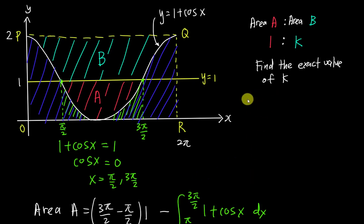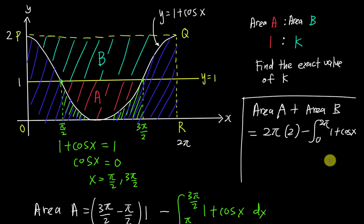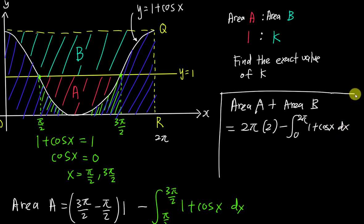I can say Area A plus Area B equals 2π multiply 2 minus the integral from 0 to 2π of 1 plus cos x dx. This is 4π minus x plus sin x evaluated from 0 to 2π. I insert 2π into x and sin x is 0, and 0 into both is 0, so it's just 2π.